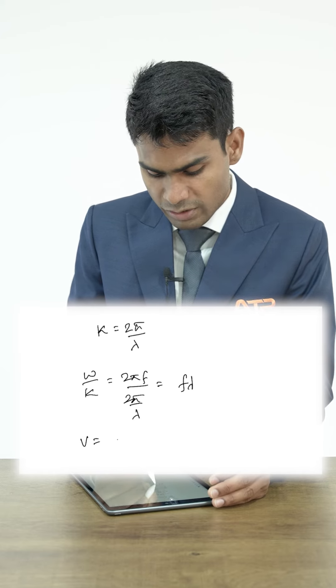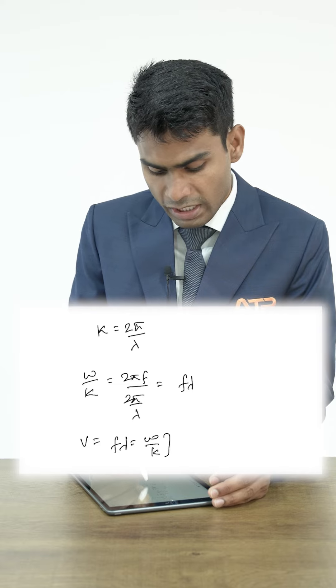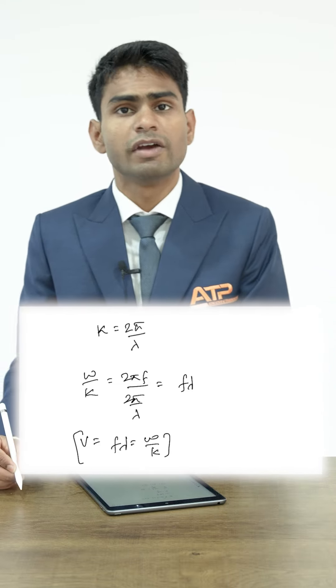So this wave speed is equal to f lambda which is omega upon k. It is the speed with which the wave travels.